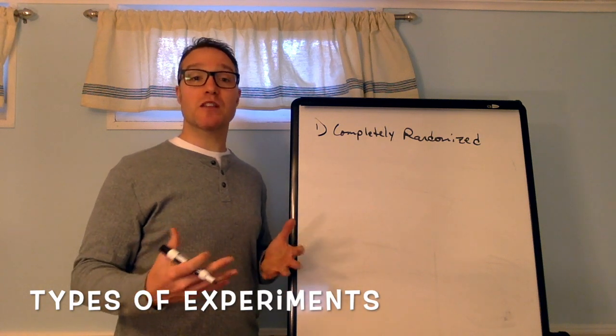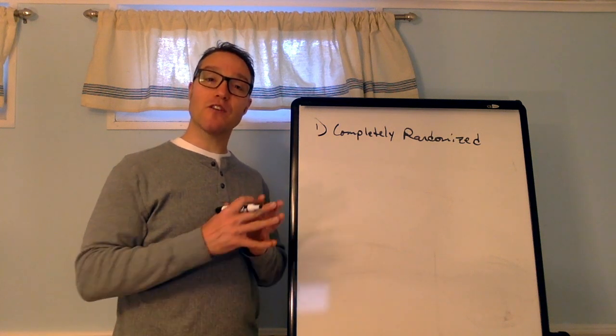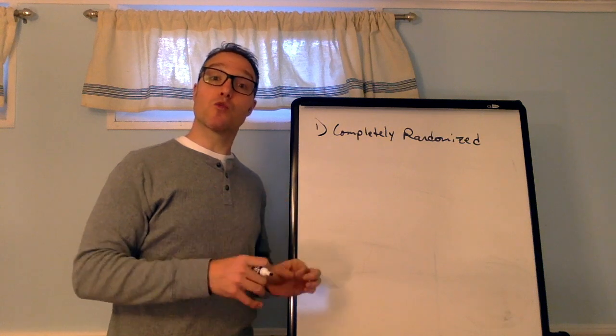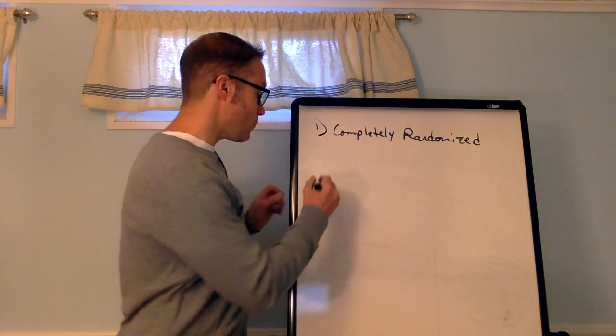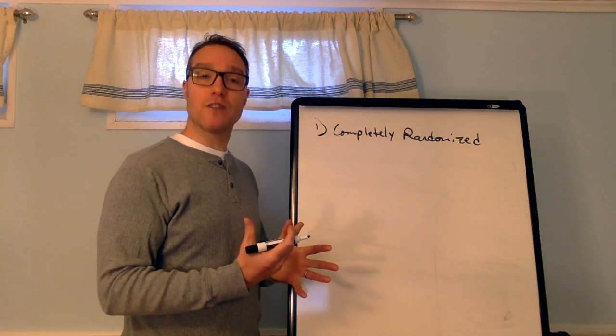It's called that because participants are randomly assigned to treatment groups. Every stage, every split in the experiment is due to random chance. So, this is where you have your sample. You've already collected your individuals.